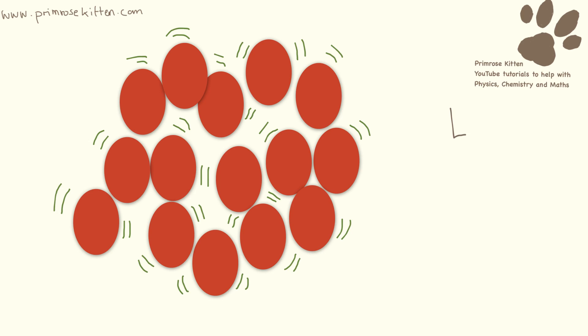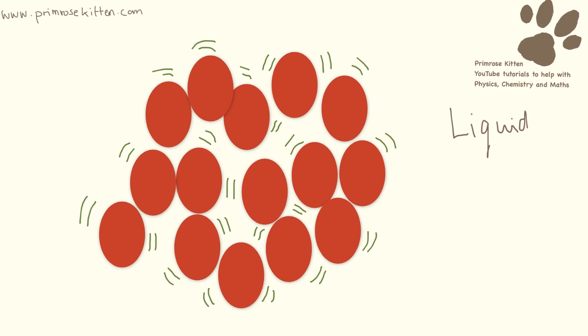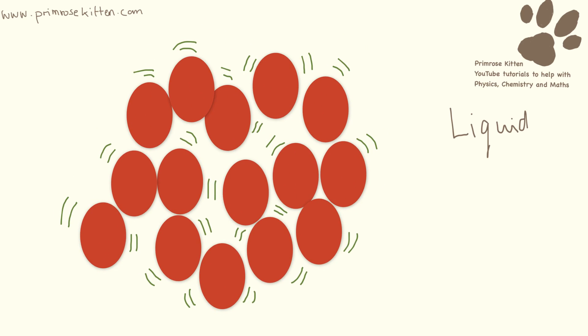Here we have a liquid, and you'll notice there is a bit more space between them. I've drawn two lines for the movement here because liquids do move around quite a lot, but some of them are still touching each other, so they're not completely separated, and they do have larger gaps in between them. So liquids can flow. They don't have a fixed shape, but they do have a fixed volume.